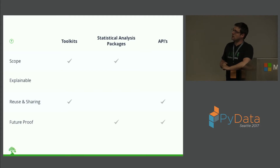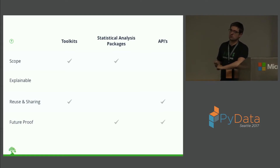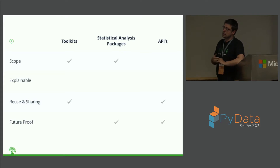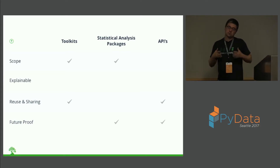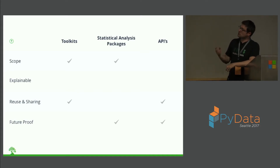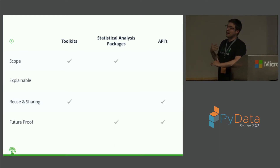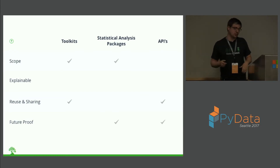But toolkits are not very explainable, and pretty much every time a new algorithm comes out you have to throw away the code you wrote and write a new model. Another group we call statistical analysis packages — products ranging from R to, in particular, DataRobot. This is where you feed a bunch of data in and a model can get generated for you. It's very easy to use, but the problem is that once the model is generated, if you want to change it you're right back into working directly with a toolkit — and now it's more complicated because the model itself was machine-generated.